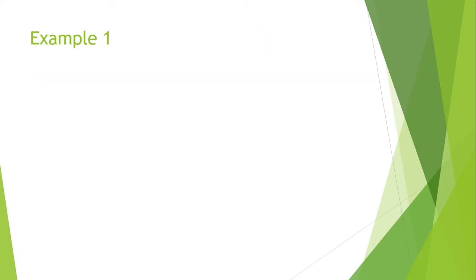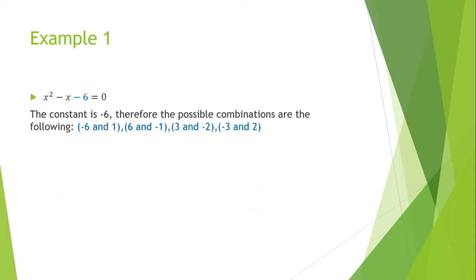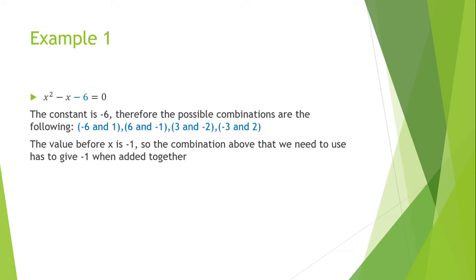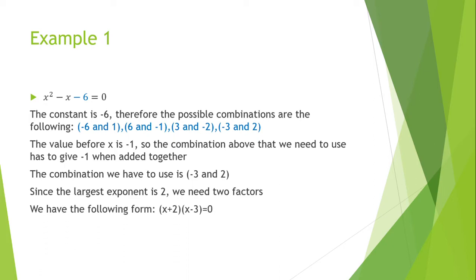So let's look at a few examples. Here's the first example. The constant here is minus 6. Therefore, the possible combinations are the following. The value before x is minus 1, so the combination above that we need to use has to give minus 1 when added together. The combination we have to use is therefore minus 3 and 2. Since the largest exponent is 2, we need two factors. We have the following form: x plus 2 multiplied by x minus 3. Therefore, we have the following two roots: x equals negative 2 and x equals 3.